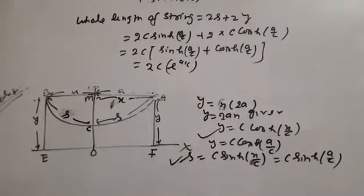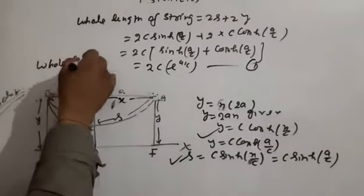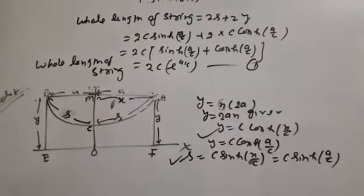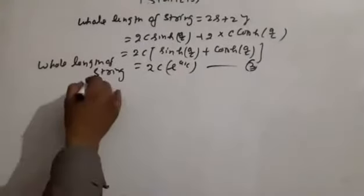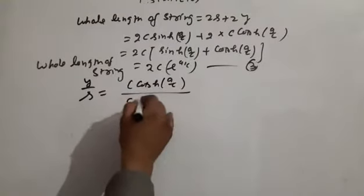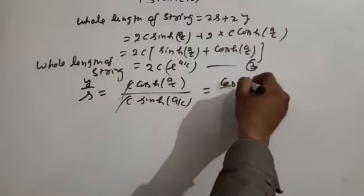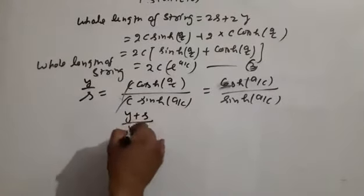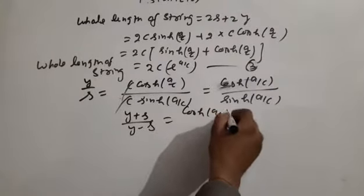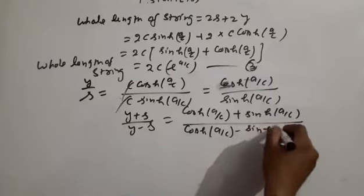Now dividing the expressions for y and s: y/s = c·cosh(a/c) / c·sinh(a/c) = cosh(a/c) / sinh(a/c). Applying the componendo-dividendo theorem: (y+s)/(y−s) = [cosh(a/c) + sinh(a/c)] / [cosh(a/c) − sinh(a/c)].